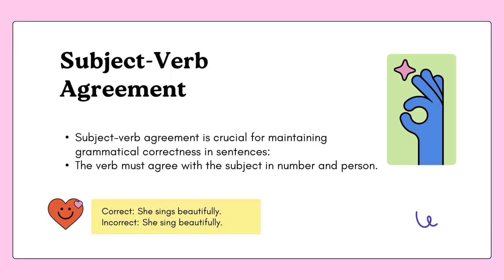Subject-verb agreement means that the subject and verb must agree grammatically. It is necessary to maintain grammatical correctness in a sentence. The verb must agree with the subject in person and number. For example: 'She sings beautifully' — the subject and verb agree, and then the sentence is complete.